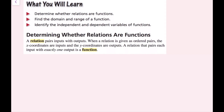In this lesson, we're going to be determining whether relations are functions, finding the domain and range of a function, and identifying the independent and dependent variables of functions. A relation pairs inputs with outputs. When a relation is given as an ordered pair, the x-coordinates are the inputs and the y-coordinates are the outputs. A relation that pairs each input with exactly one output is a function.